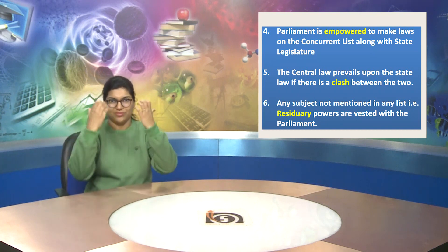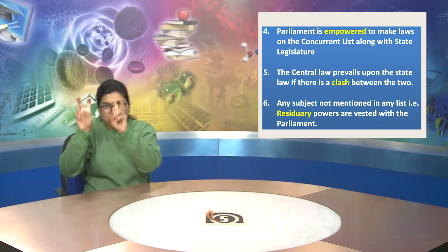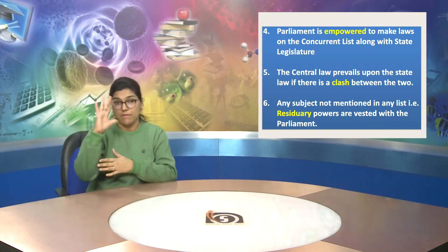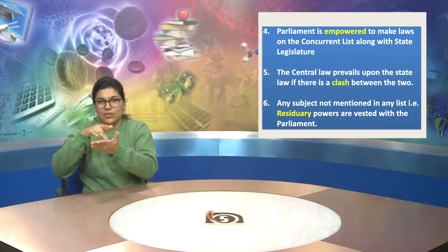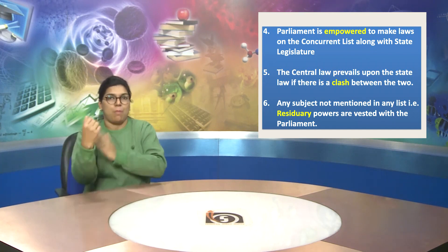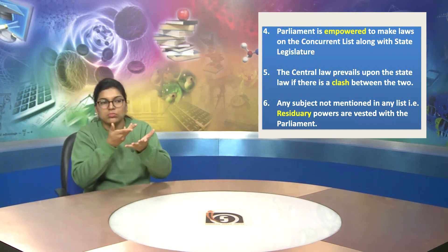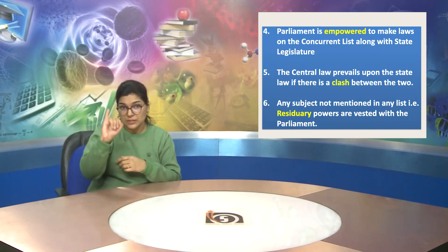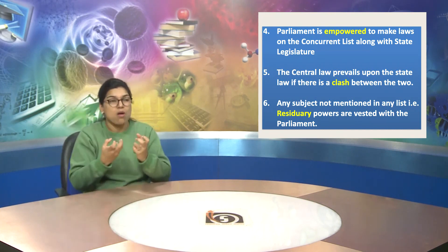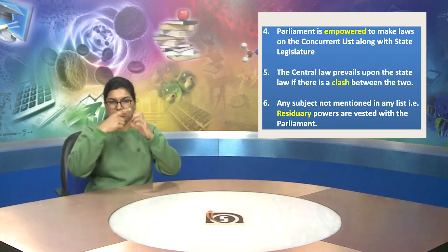Point number four: Parliament is empowered to make laws on the Concurrent List along with state legislature. Point number five: the central law prevails upon the state law if there is a conflict between the two. Point number six: any subject not mentioned in any list — that is, residuary powers — are vested with the Parliament.